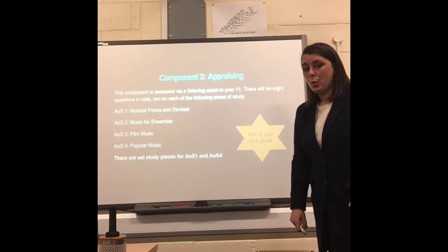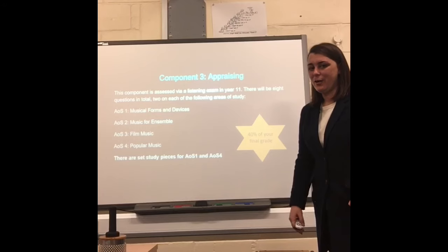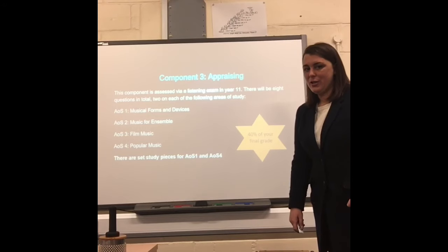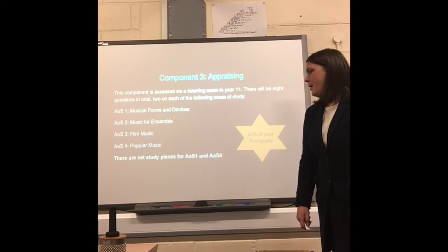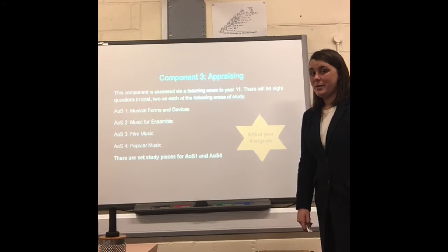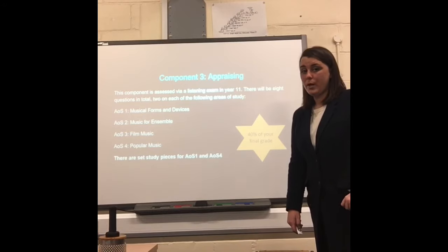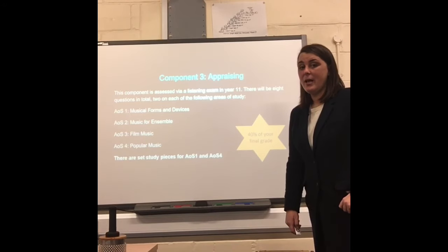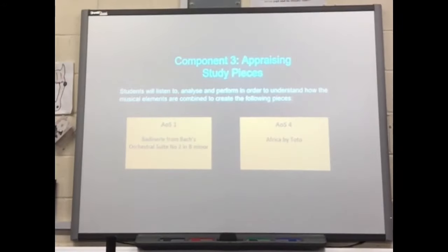Throughout the course these are the four main areas that we focus on when we are investigating, listening, analysing and developing knowledge of music. There are two set pieces for GCSE music — one from area of study one and one from area of study four. In area of study one you're going to be studying the Badinerie from Bach's Orchestral Suite Number 2 in B minor, and in area of study four you're going to be studying Africa by Toto.